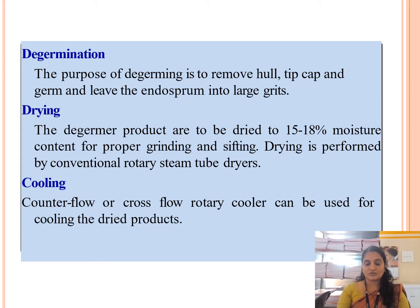After de-germination, we move to the drying process. The de-germed product is dried to 15 to 18% moisture content — reduced from the 21% moisture after conditioning. Once the moisture content is reduced to 15 to 18%, it is ready for proper grinding. Drying is performed by conventional rotary steam tube dryers.